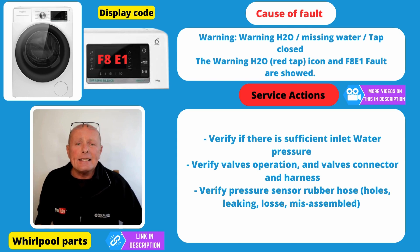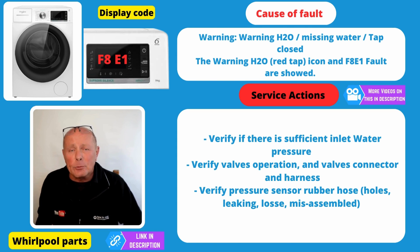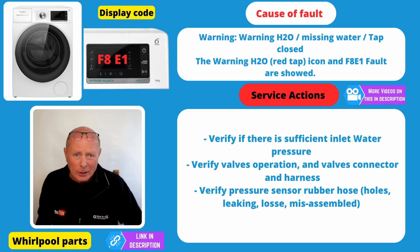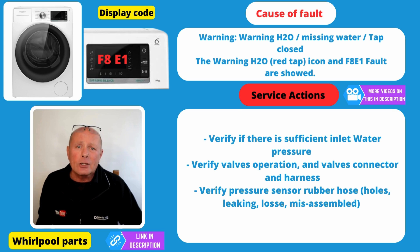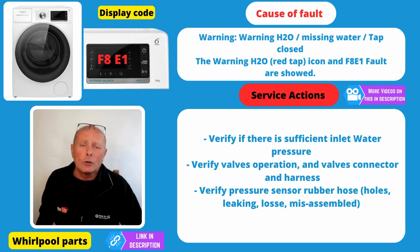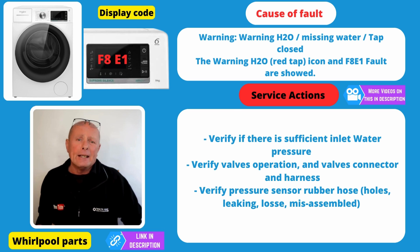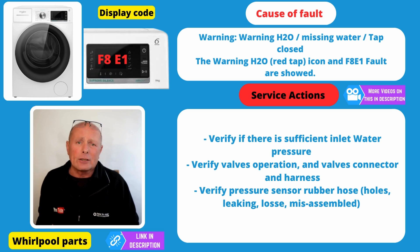Error Code F8E1 is basically saying the machine is unable to fill in the allocated period of time. Check your water supply going to the water valves on the washing machine. Also make sure that when the machine is pushed back in, there's no kink in the pipe restricting the flow, and do your normal checks on the water valve. There's a video below to assist you in testing water valves. Also make sure the filter in the back of the water valve hasn't got any debris restricting the flow of water.